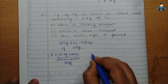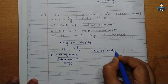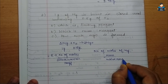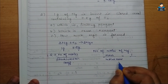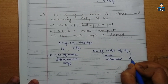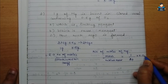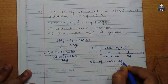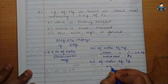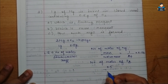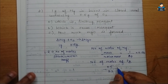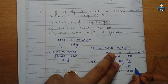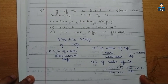Find number of moles of Mg: mass = 1 gram, molar mass of Mg = 24, so moles of Mg = 1/24 ≈ 0.04 moles. Find number of moles of O2: given mass = 0.5 grams, molar mass of O2 = 16 × 2 = 32, so moles of O2 = 0.5/32 = 5/320 ≈ 0.01 moles.